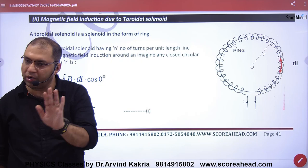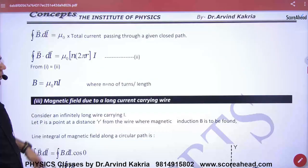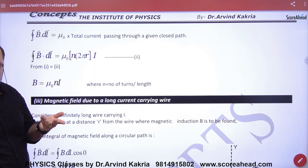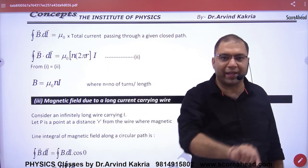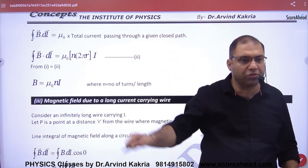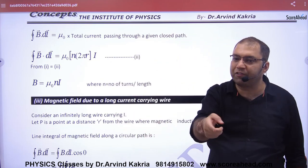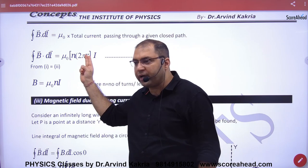B dot DL equals μ₀ times total current passed. Now the problem is the closed path has turns, and the closed path length is 2πR. So small n means number of turns per unit length.